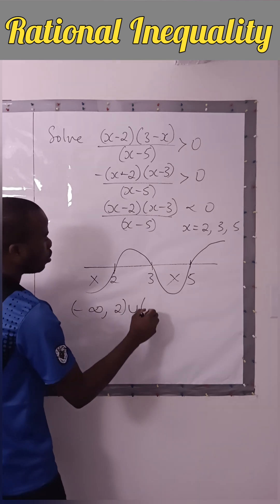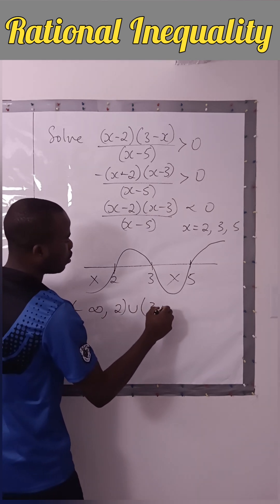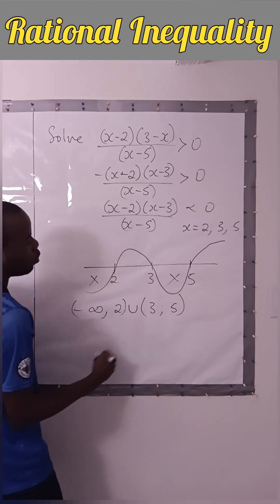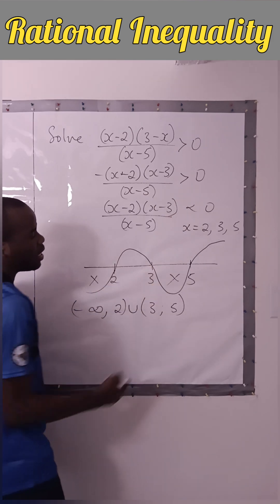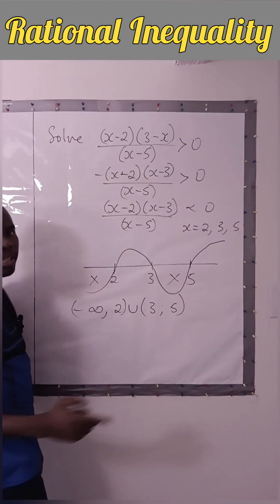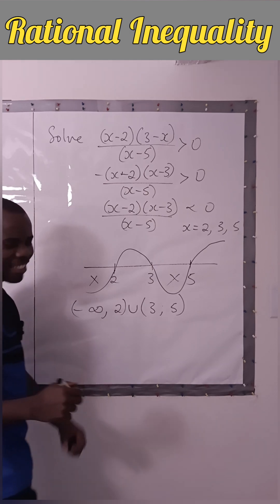The solution is minus infinity to two, open interval, union three comma five, open interval — because this is strictly less than zero. So these are the values for which the inequality is satisfied. Thank you for watching.